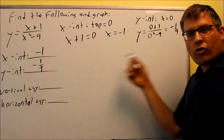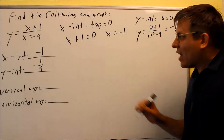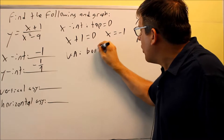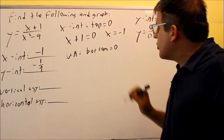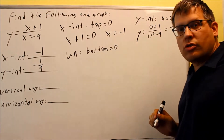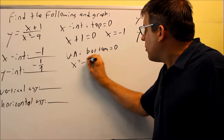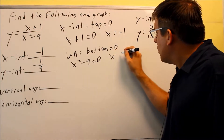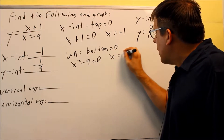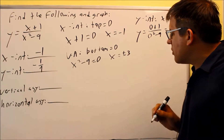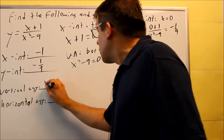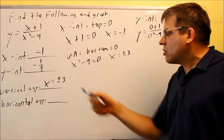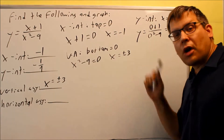Next, I want to find the vertical and horizontal asymptotes. For the vertical asymptote, the bottom is set equal to 0. x squared minus 9 equals 0. Solving that, I get x equals plus or minus 3. So x equals positive 3 and x equals negative 3 are the vertical asymptotes.